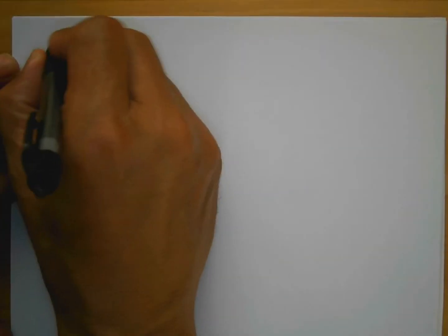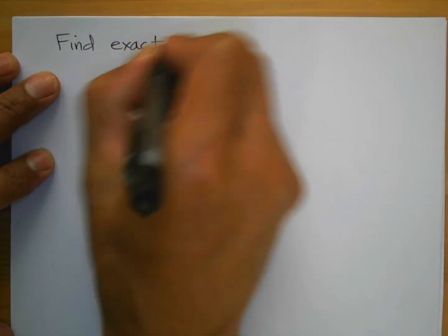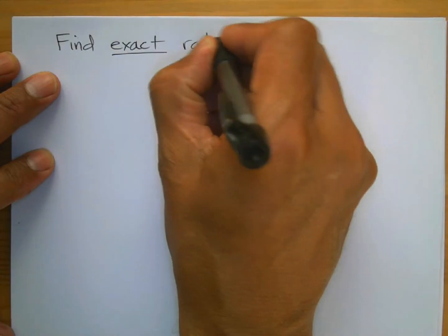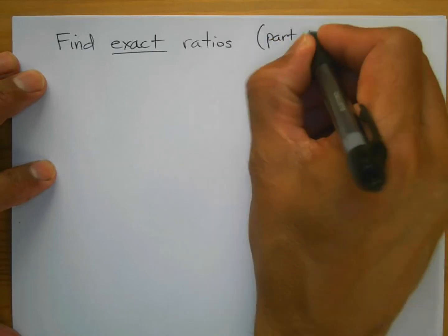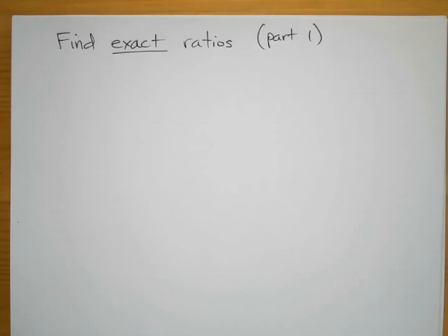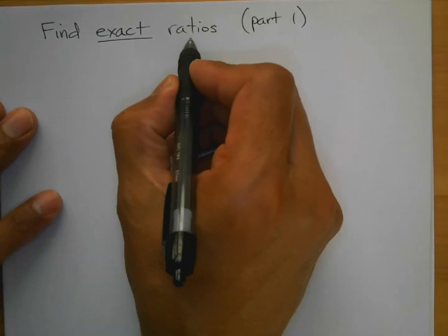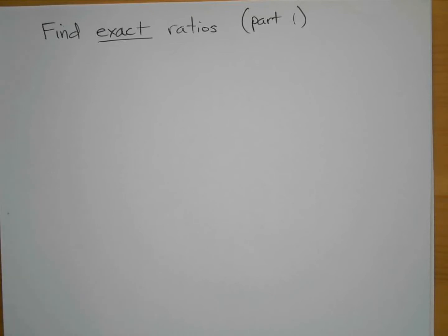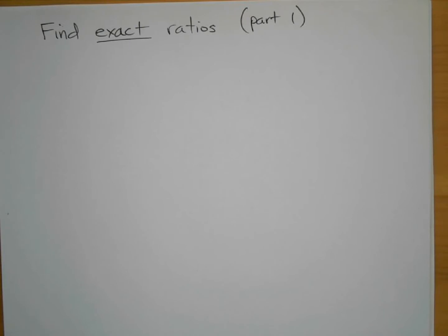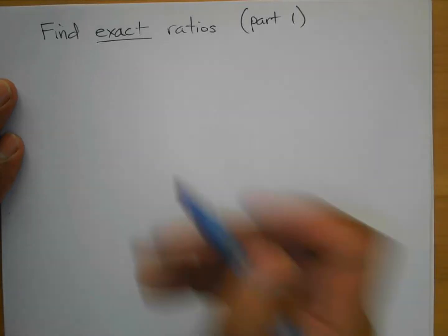Here we go — find exact ratios. This is part one, the first video. There's a second piece of the problem we'll talk about in the second part. Exact ratios means you're not just going to punch these numbers into a calculator. You're going to give a ratio, which is a fraction.